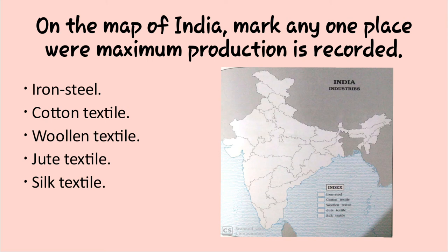For cotton textile industry, we go directly to Ahmedabad for marking maximum production of cotton. For jute textile industry, we go directly to West Bengal — there we have the maximum jute production.